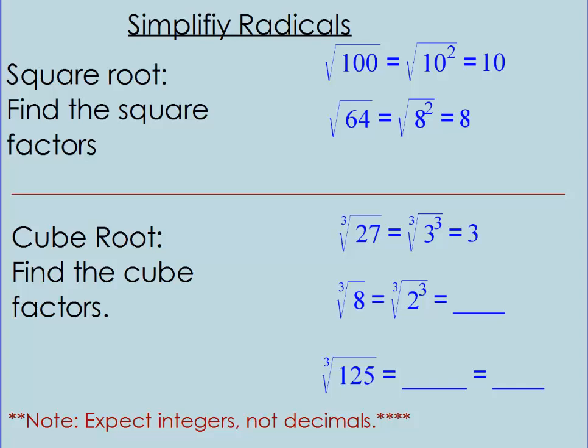Alright, simplifying radicals. Well, you know how to simplify a square root, right? You just find the square factors. What does that mean in English? You take 100, it's the same thing as 10 squared. So when you want to square root 10 squared, it's just going to come out to that 10. Same thing as 64. 64 is 8 times 8. So square root of 8 squared, that's going to be just 8. So square roots, you've got to find something squared.